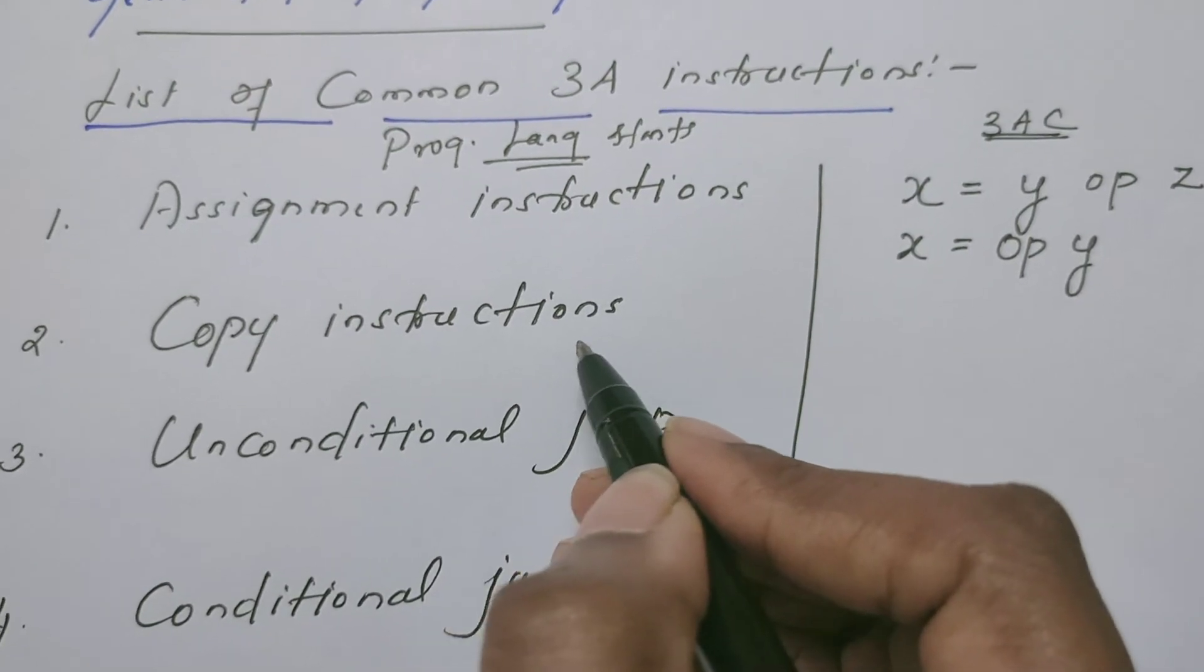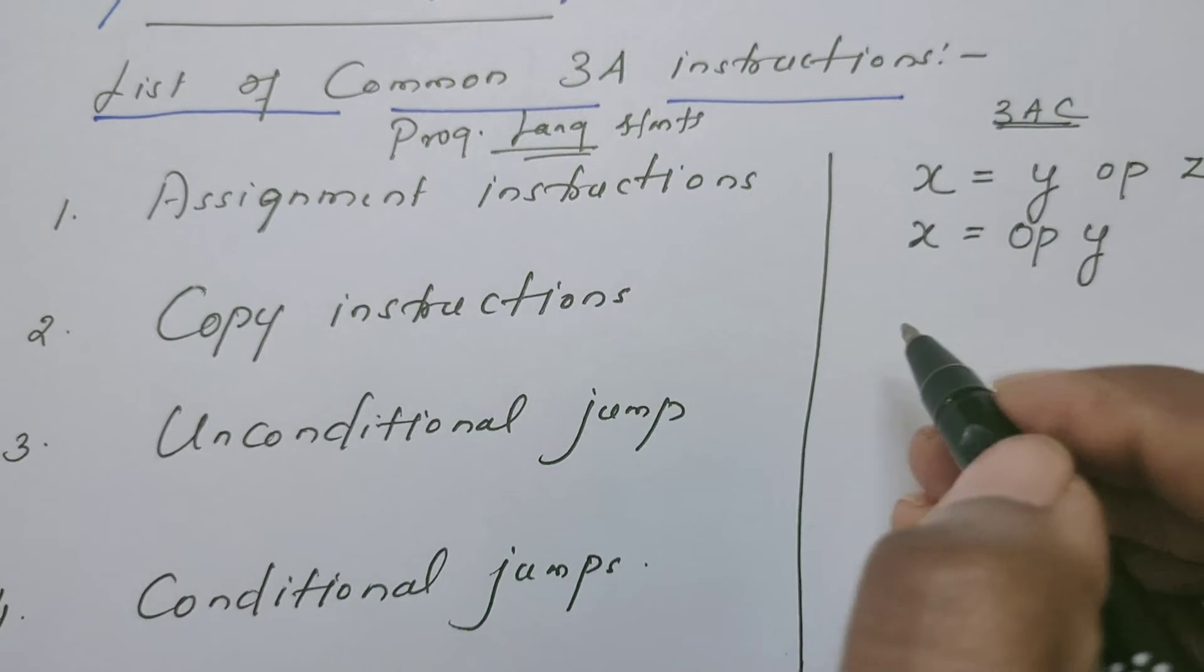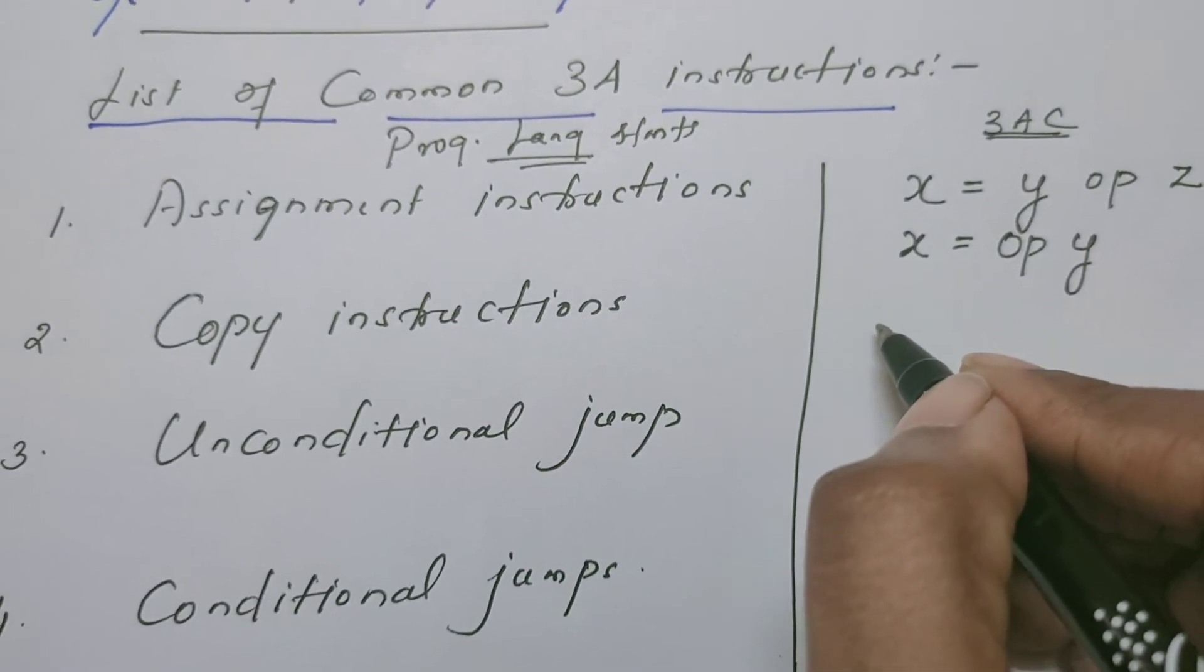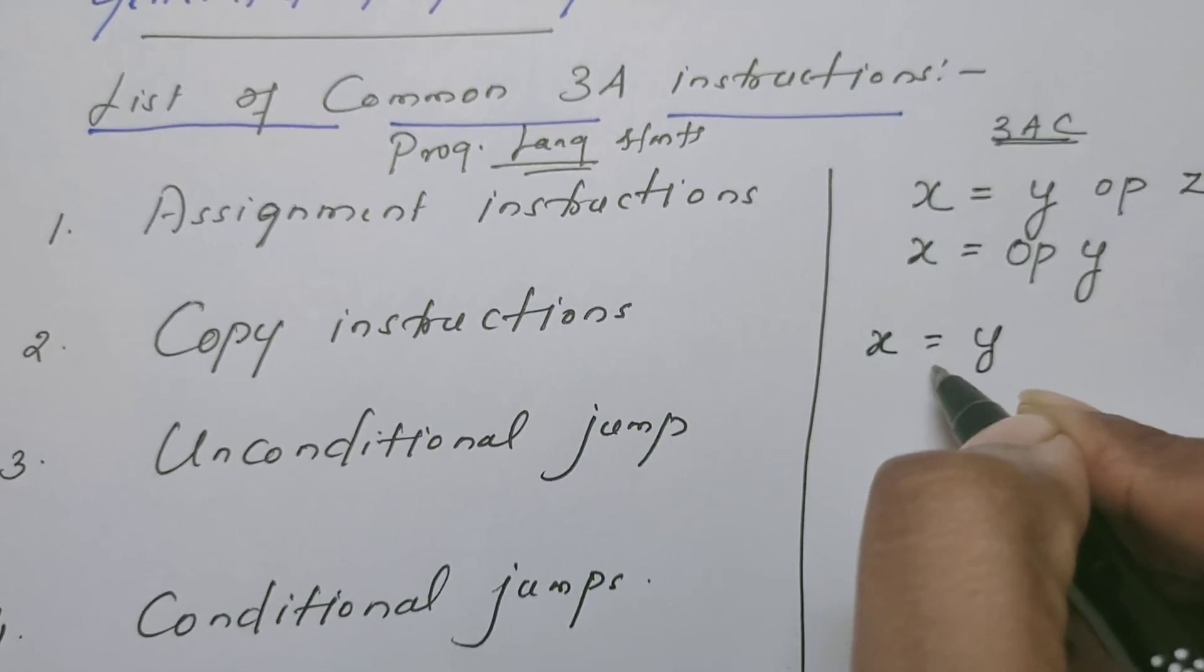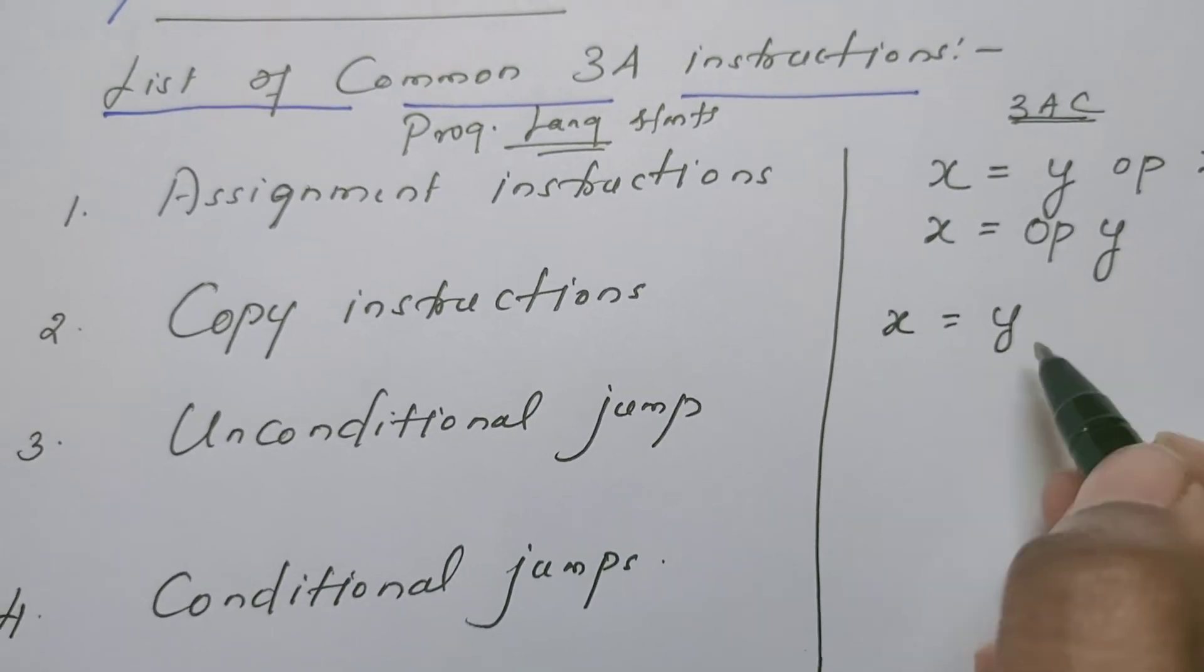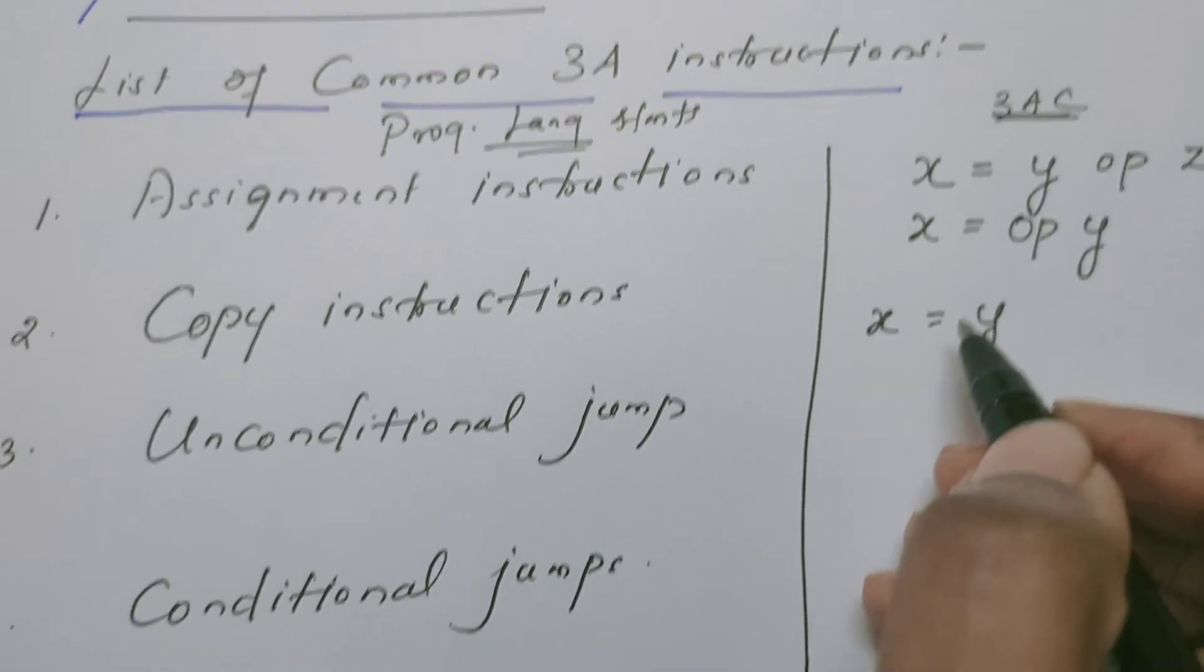How do we write the copy instructions? In high level programming languages, there will be copy instructions. How do we write that? Very simple: x is equal to y. Using this assignment operator, we can say that the copy of y is available in x also.